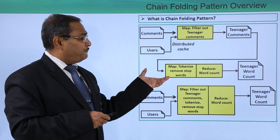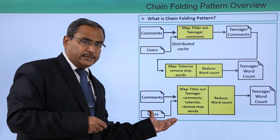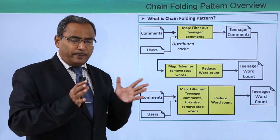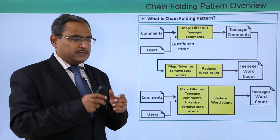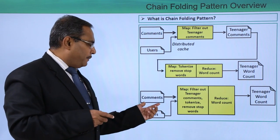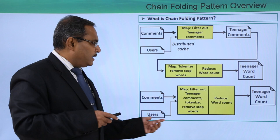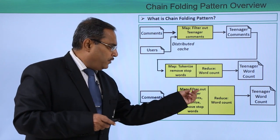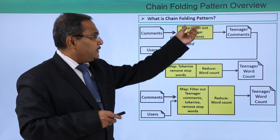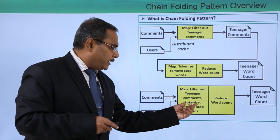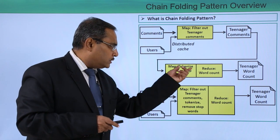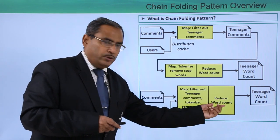Now in case of chain folding pattern, we can do this one in this way. We are going to do the optimization of the map phase processes and tasks. Comments will be taken, users are there, and then we are having this map filter out teenager comments and also tokenize remove stop words and then reduce will be coming.